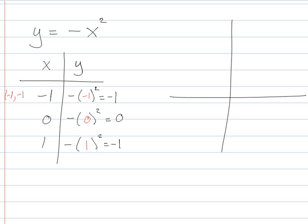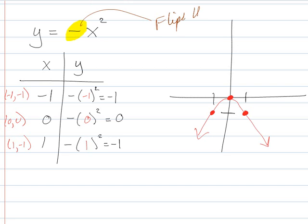So I'll have points at negative 1, negative 1, 0, 0, and 1, negative 1. So what's happened here is our negative sign flips the parabola. Now the parabola is pointing down. It's a sad parabola, a sad face parabola.